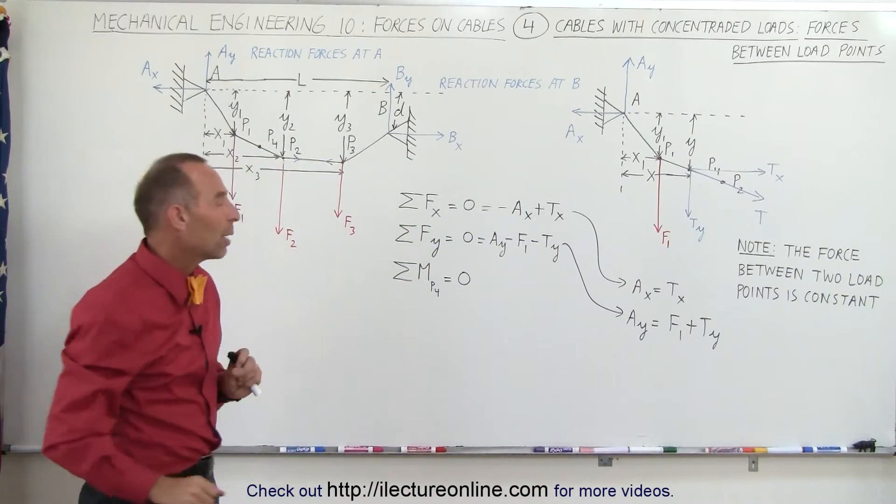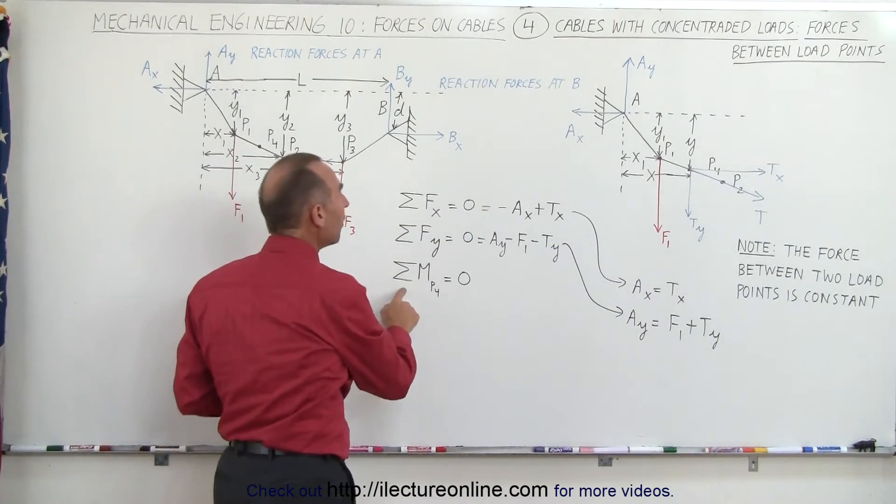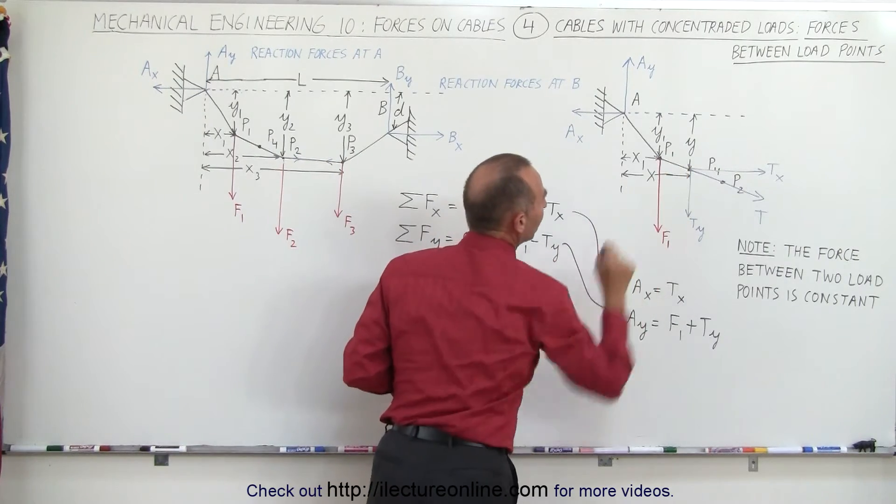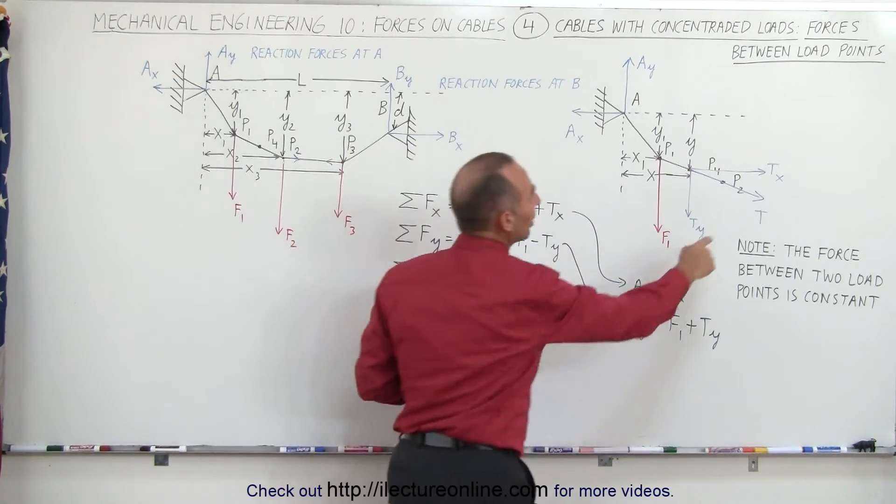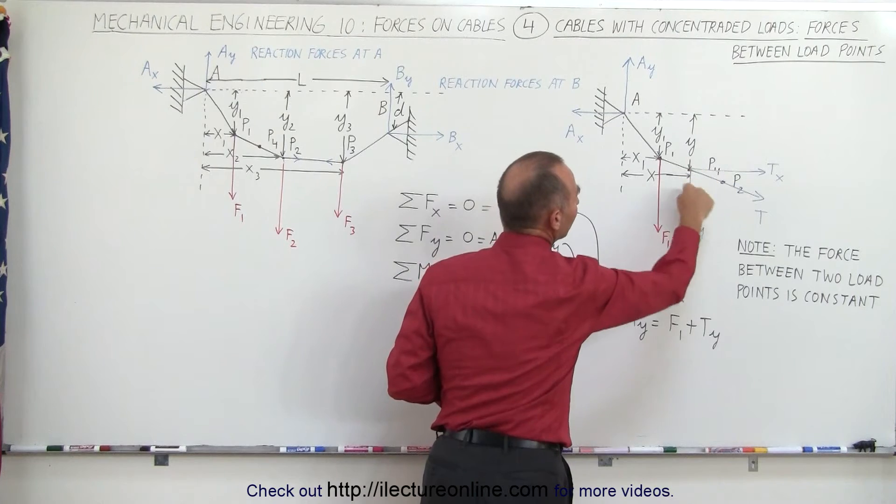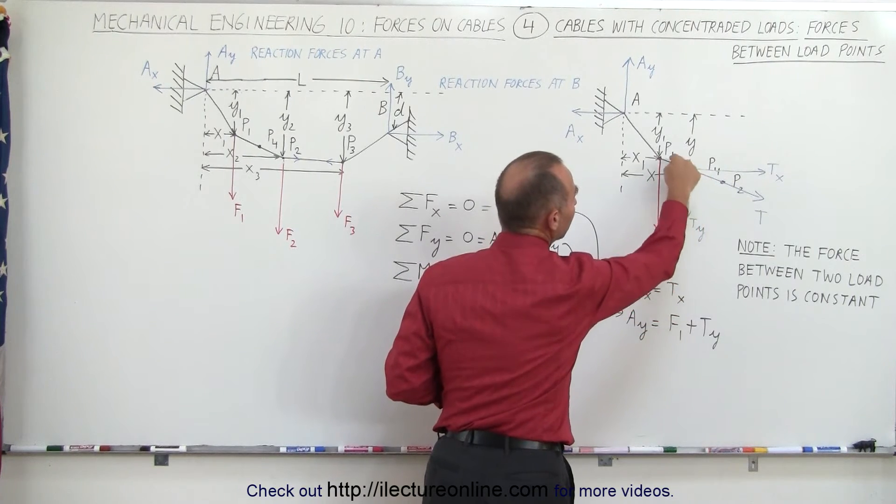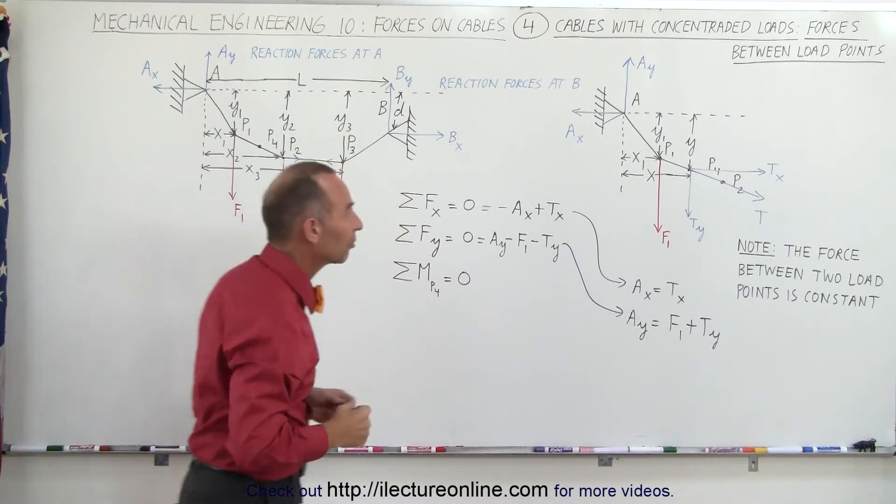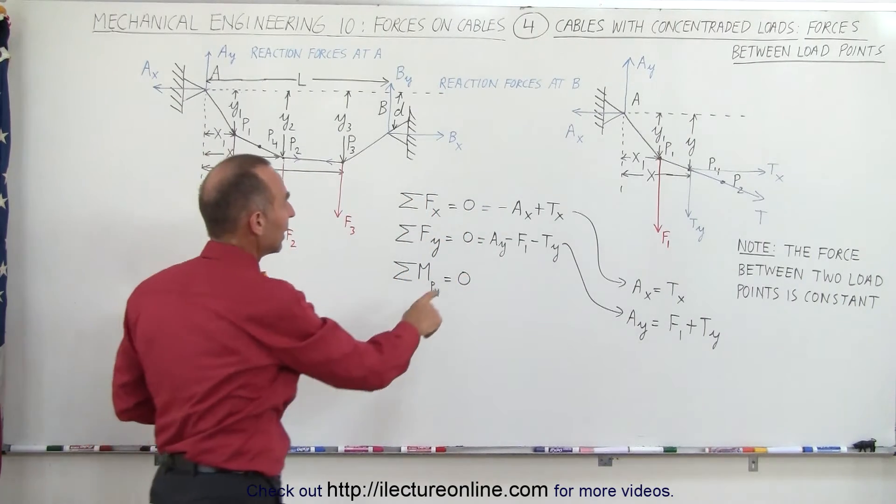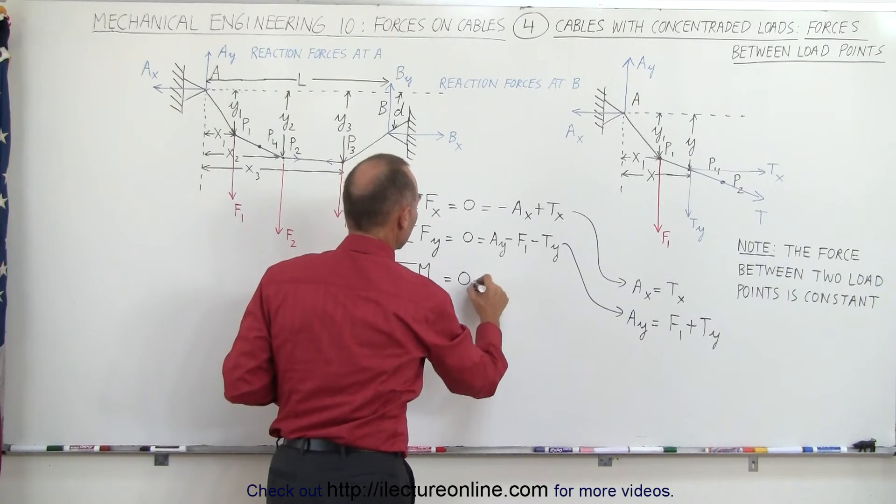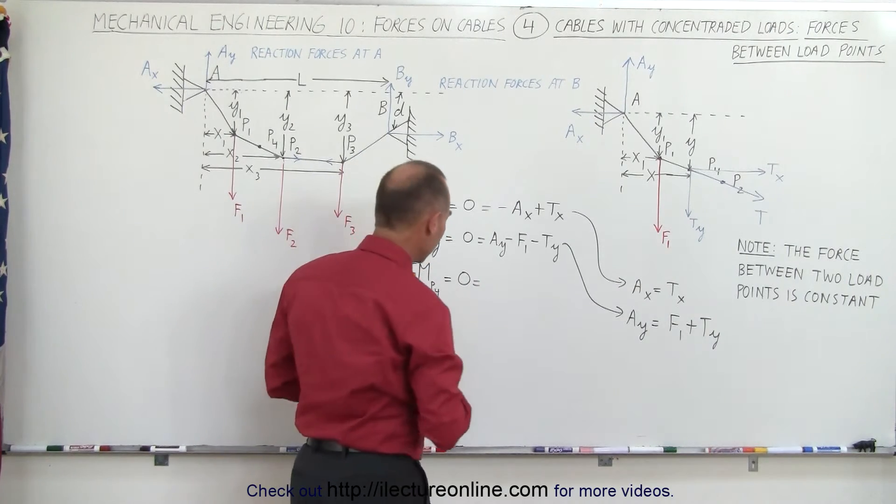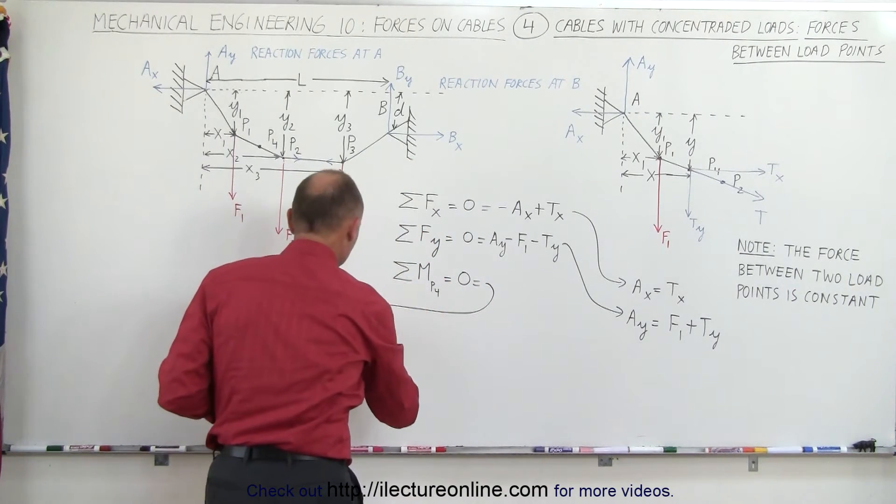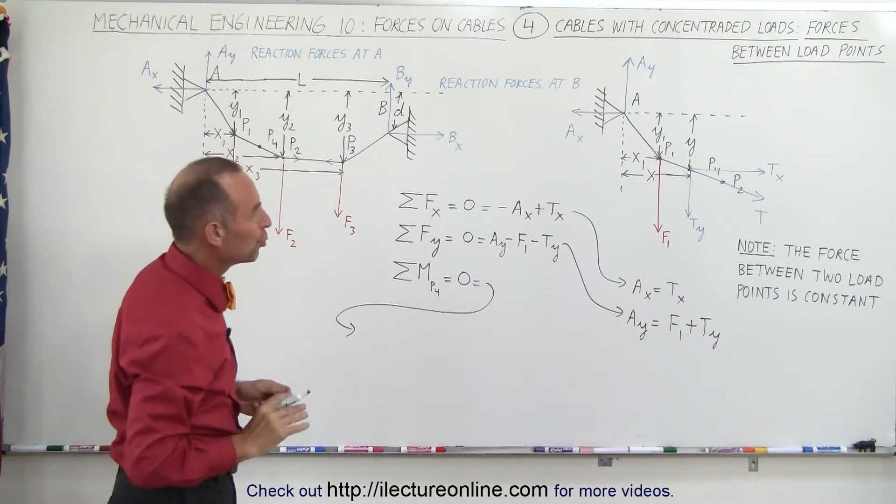Finally, what we're going to do now is we're going to find the moment about P4, about this particular point, which means it eliminates the tension in this cable because the cable goes right through that pivot point, and therefore those are eliminated in this calculation. We know that they must add up to zero, so therefore this equals. And let me go over here because I think I'm going to need a little bit more room.